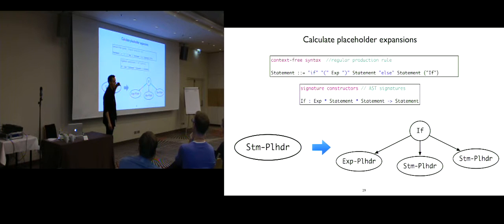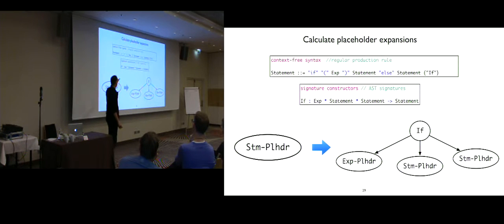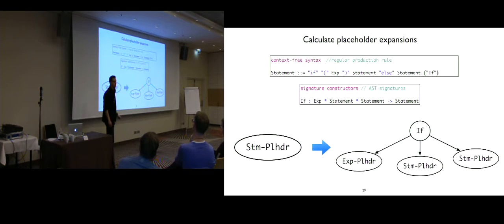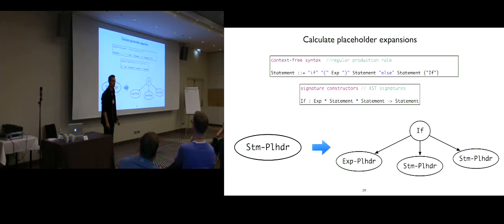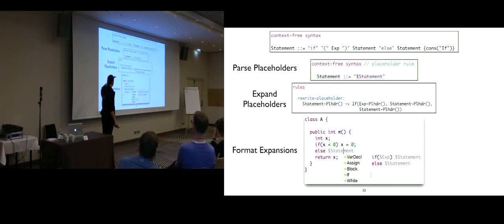The second thing is defining how to expand these placeholders, which we also generate from the syntax definition. A production rule defines how a node in the AST is constructed — for example, the if statement has an if node with subnodes: an expression, a statement, and a statement. Based on the AST signature, we construct placeholder expansions. We construct an expansion for the statement placeholder that is an if, with placeholder children. By calculating this based on the syntax definition rules, we parse placeholders, expand placeholders, and format the result to get code completion.